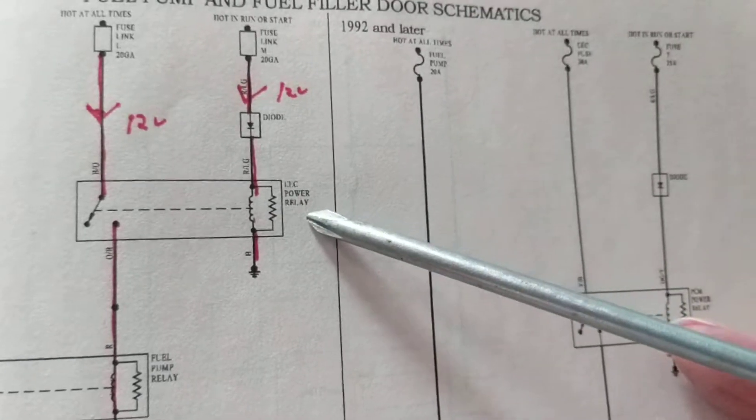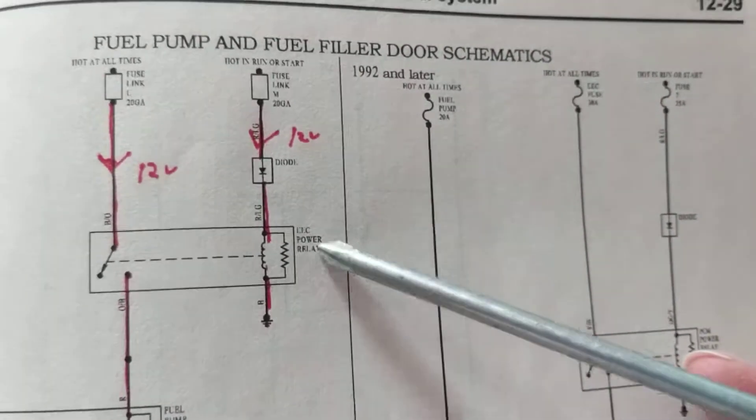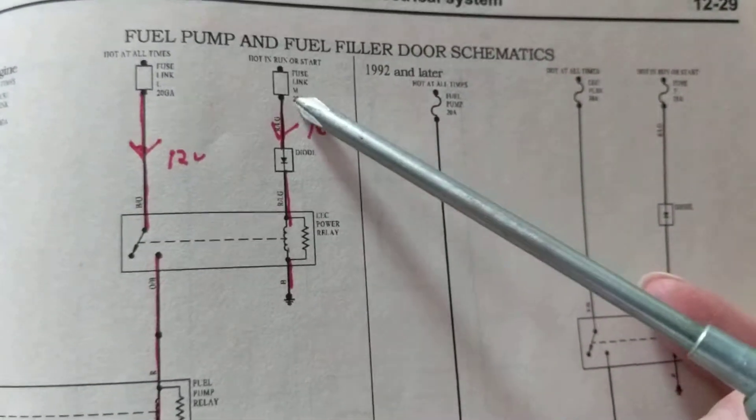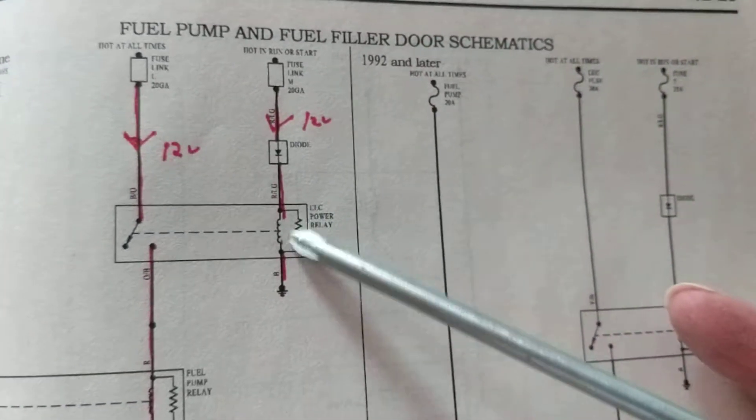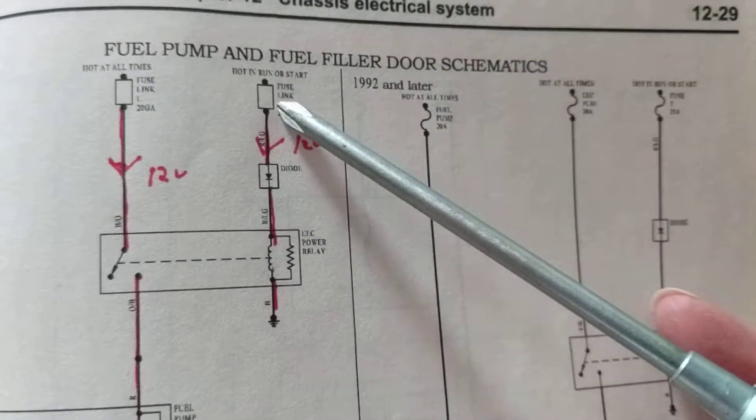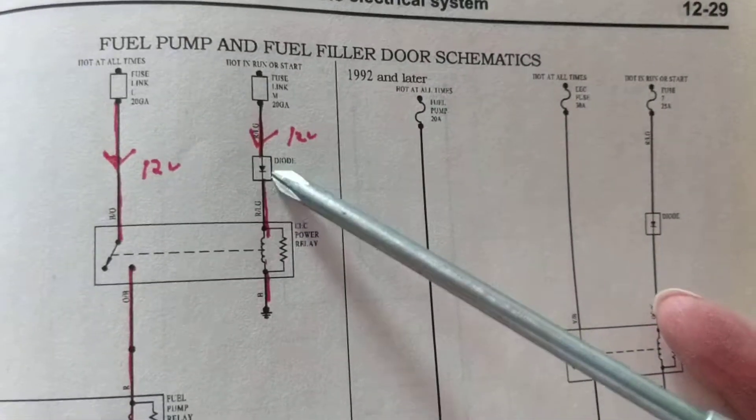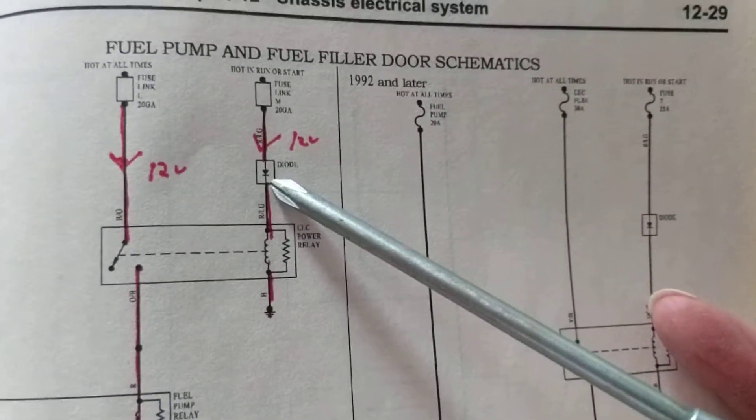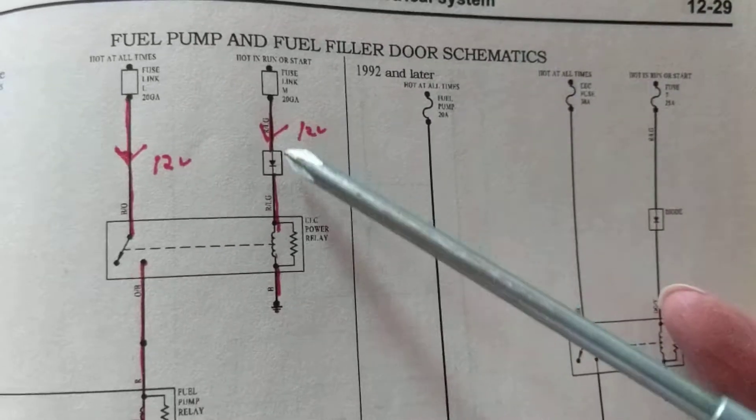We have the power relay over here. We know we have to magnetize this to make this work, so we're going to have current flowing over here. There's a diode over here. The diode works in one direction. When positive will be connected, if negative will be directed from the battery, it will be reverse biased, it cannot conduct.